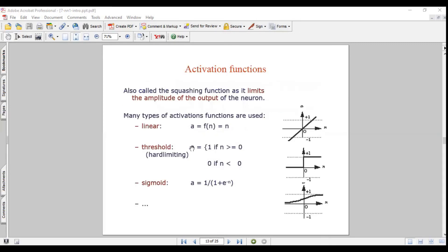The activation functions are linear, threshold, and sigmoid. In the linear, a equals f of n equals n. Threshold value becomes 1 if the n value is greater than or equal to 0. Threshold value becomes 0 if n is less than 0. The sigmoid is a equals 1 divided by 1 plus 2 to the power of minus n. The squashing function has limits to amplitude as output of the neuron.